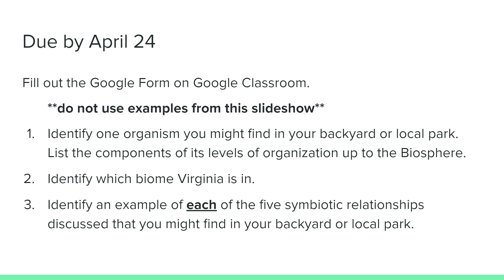The second question is to identify which biome Virginia is in. If you don't remember, watch this video again because I promise we talked about it. And last, identify an example of each of the five symbiotic relationships discussed that you might find in your backyard, local park, or neighborhood. Go out and see what you can do. Get some fresh air. Look at the world around you and get inspired. Be sure to stay at least six feet away from other people. I miss you guys — please don't hesitate to reach out to me with any questions. Take care and make good choices.